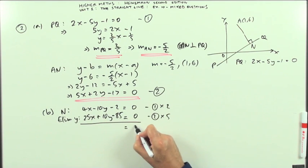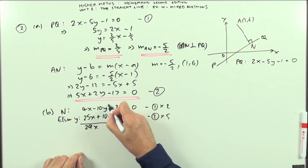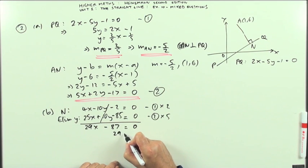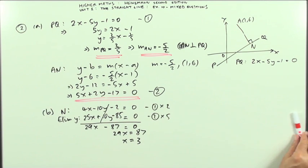And then adding the two equations together is going to give me 29x. They go, of course, minus 87 equals 0. So 29x equals 87. And that's a 3, isn't it? 3 nines are 27 carry 2. So x equals 3.